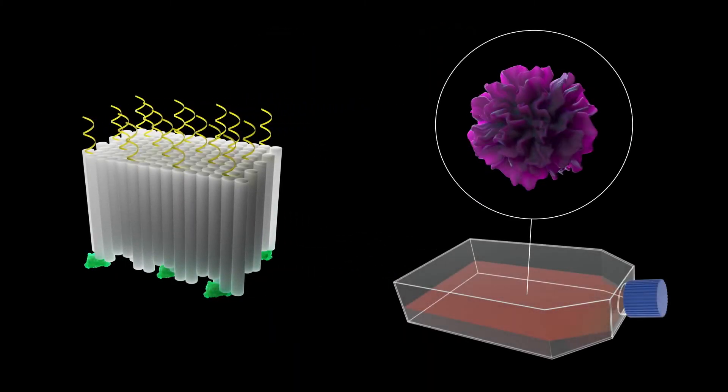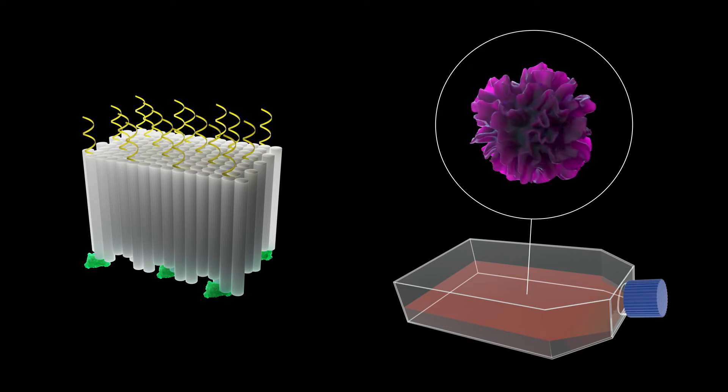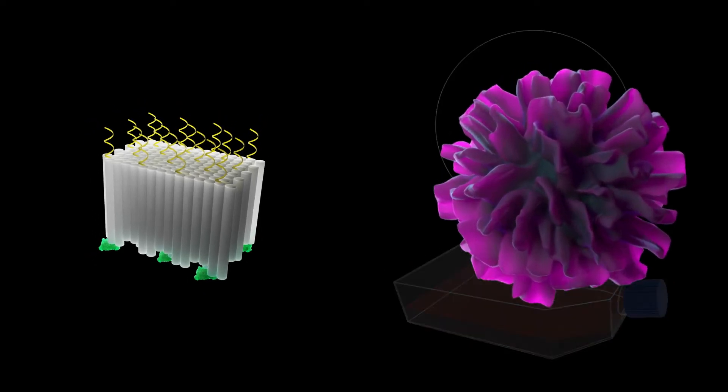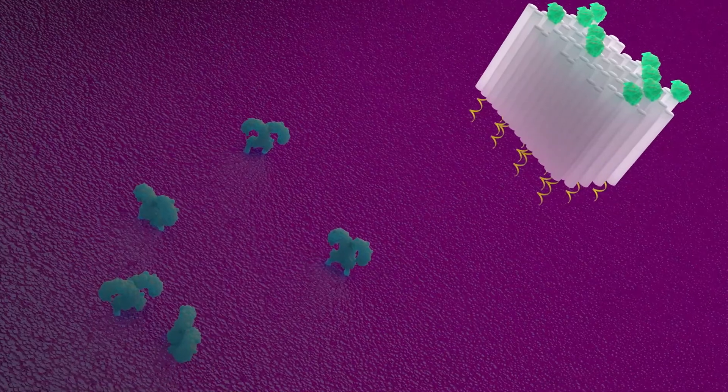They first tested their series of DORIVAC vaccines in vitro using cultured immune cells. Dendritic cells in the culture take up the DNA origami tumor vaccines by endocytosis inside endosome vesicles.